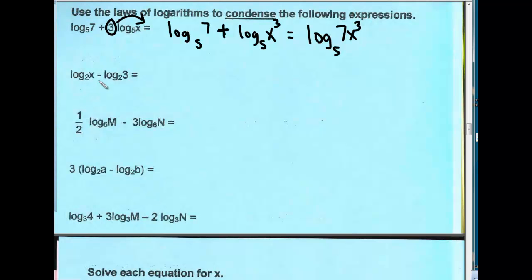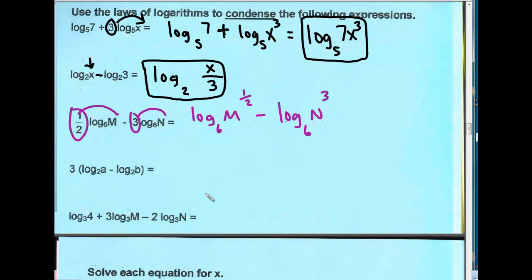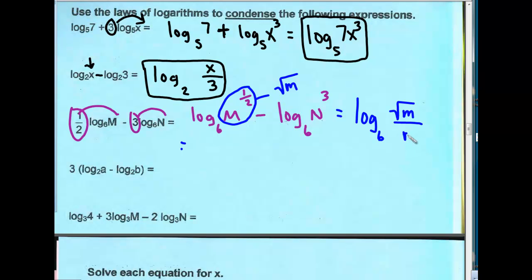In the next example I have a minus sign, so this becomes log base 2 of x over 3. Next example: take care of the exponents first — the coefficients become exponents, giving log base 6 of m to the one-half minus log base 6 of n to the third power. Remember, m to the one-half is the same as the square root of m. So now we have log base 6 of the square root of m divided by n cubed.